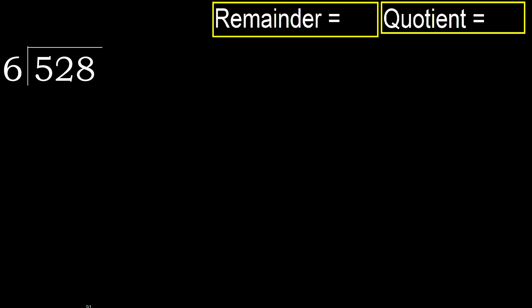528 divided by 6. 5 is less than 6, therefore next. 52 is not less, therefore divide 52 by 6. Multiply by which number is nearest to 52 but not greater than 6.